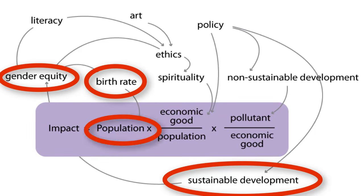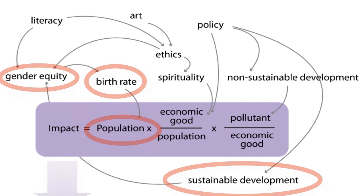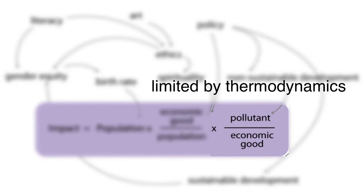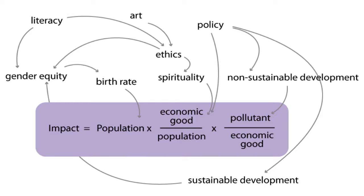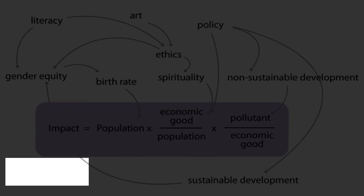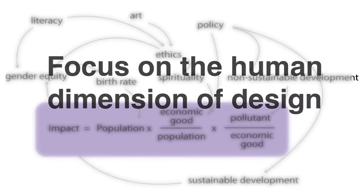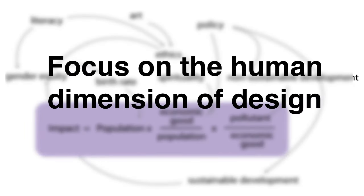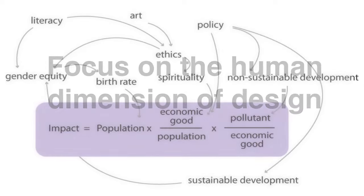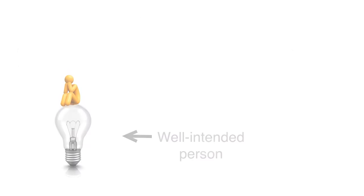While technology efficiency is limited by the laws of thermodynamics, things like gender equity, literacy, art, ethics, and spirituality are not mathematically limited. These areas of intervention do not necessarily require new investments of energy or materials, but do require an attention to the human influences of the system behavior.